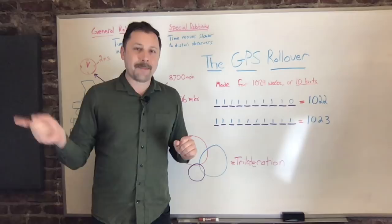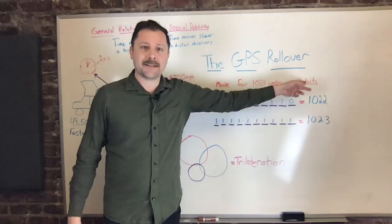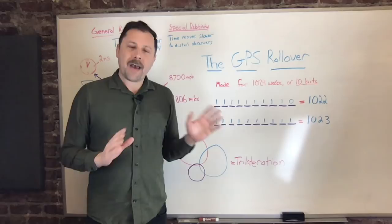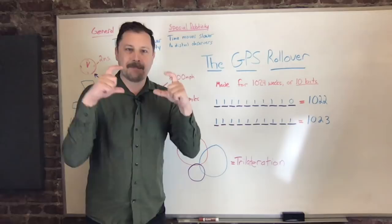So in binary, when we store something in 10 bits, that allows us to have 1,024 weeks. If you do some fidgeting with the math, you'll understand that in base 2, you can store up to 1024 inside of that piece of storage. And I'll give you a good example of what this looks like.